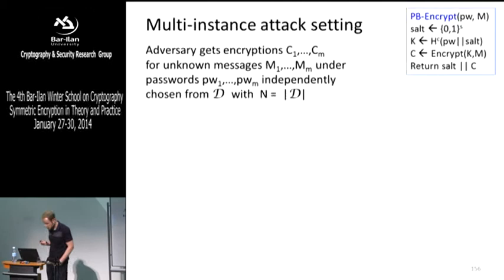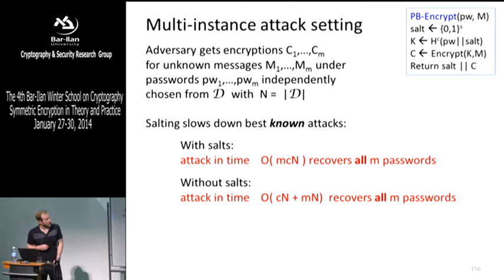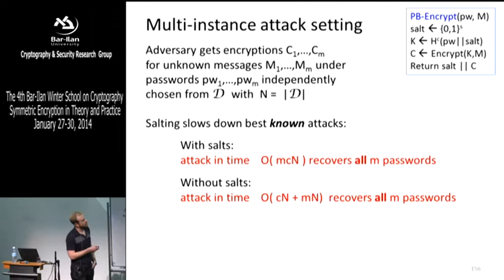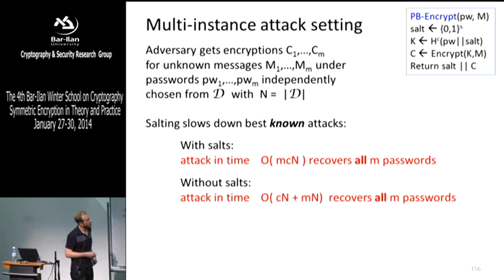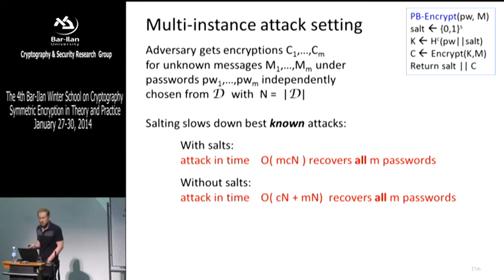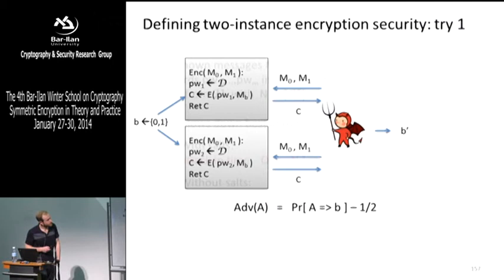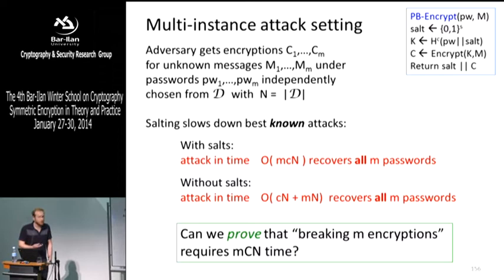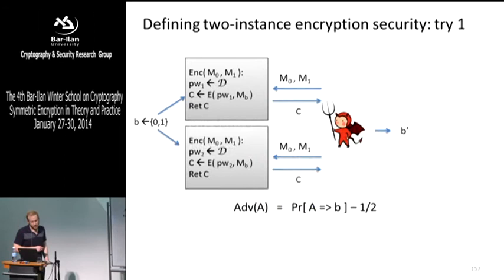But our existing encryption model proved security already without salts, so there's something off. The reason is we didn't have a rich enough definition of security in terms of the attack setting — you're not just getting one user's ciphertext, you're getting lots of user ciphertexts. We need to look at a multi-instance setting where we have many ciphertexts of messages encrypted under different passwords from different users. The best attack requires about m times c times n time without salts, but salts prevent a speed-up using precomputed tables.